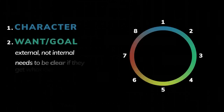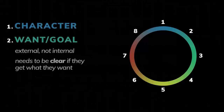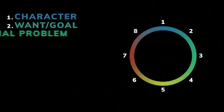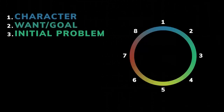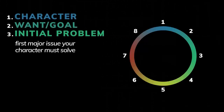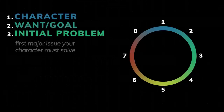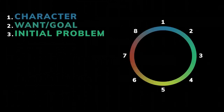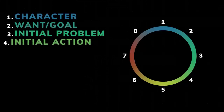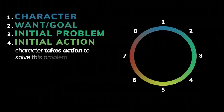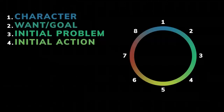It needs to be clear to the audience whether or not your character has gotten what they wanted. Then we have the three — the initial problem. This will be the first major issue your character must solve. Something isn't going their way. This is a problem they cannot ignore, which sends us to the four — the initial action. Your character takes action to solve the problem that arises at the three. How does your character solve the problem so that they can get what they want?